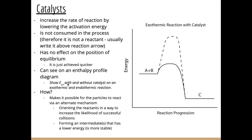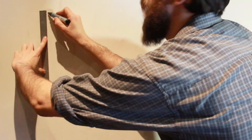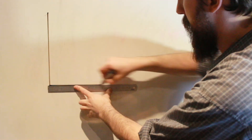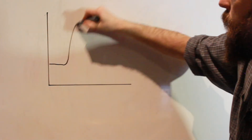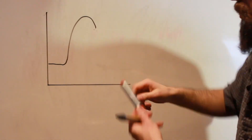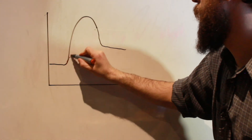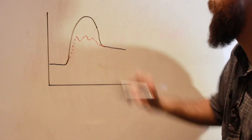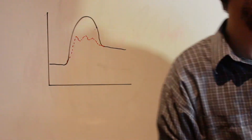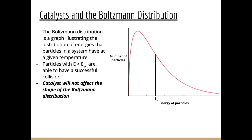Catalysts can also form different intermediates that have lower energy. If they have lower energy, they can be more stable. You could even have a catalyst where — for an endothermic reaction — the catalyst forms an intermediate, then another intermediate, then another. So you've got different transition states that occur. But essentially, all it's doing is providing an alternate mechanism for the reaction to occur.